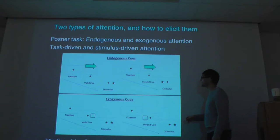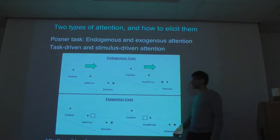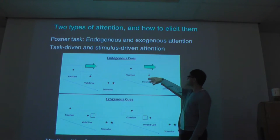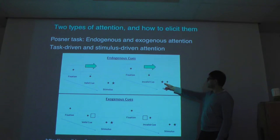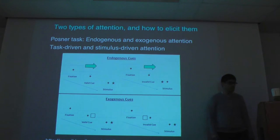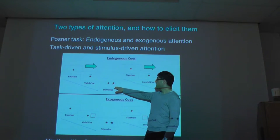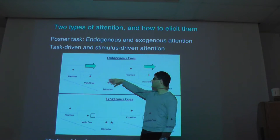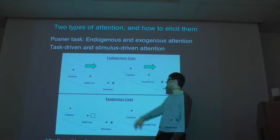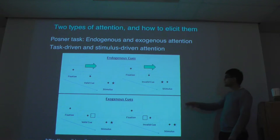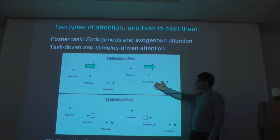This is called a valid cue because it points to the right and the thing actually is going to come to the right. You can also do the converse — the arrow points to the right but that mean old experimenter puts the stimulus on the left. Just as you're faster and more accurate if your endogenous cue was pointing in the direction where the stimulus actually did turn out to be, if it points in the opposite direction and kind of puts you on the false scent, then you're slower and less accurate. And if you have a cue that is completely uninformative, you're kind of in between.